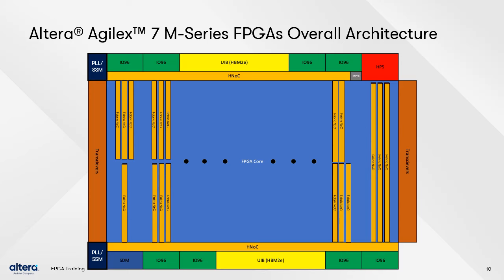Here is an overall view of an Altera Agilex 7 M-Series FPGA with the NOC resources included. The main part of the NOC is the horizontal NOC, or HNOC, that spans the top and bottom periphery of the device. You can see how it acts as an intermediary between the core FPGA fabric and IO, though GPIO and lower performance memory interfaces can bypass the NOC to directly access the IO96 IO banks. Also shown are optional vertical NOCs, referred to as fabric NOCs, that work with the NOC to improve performance.